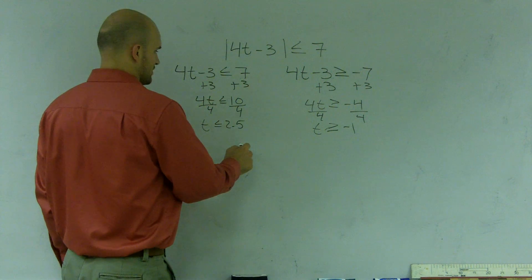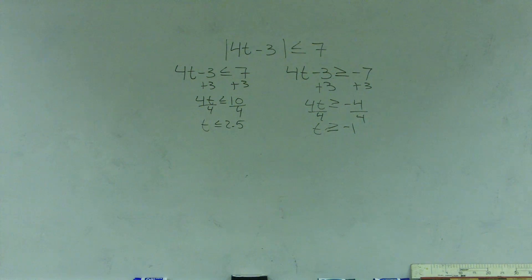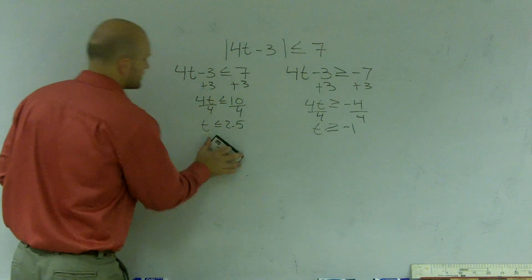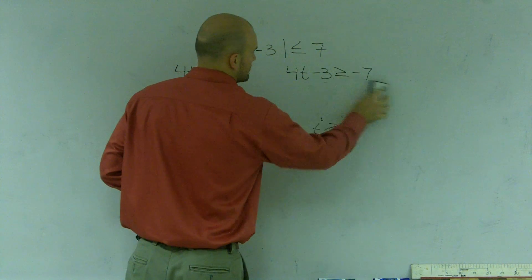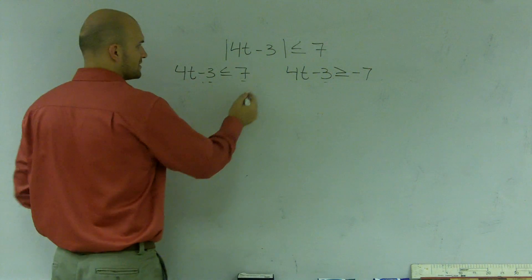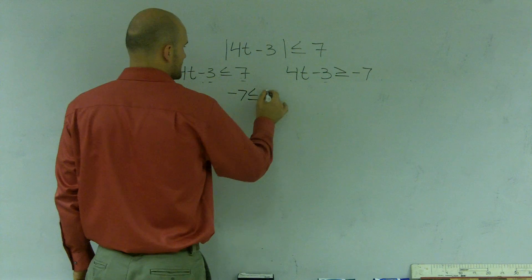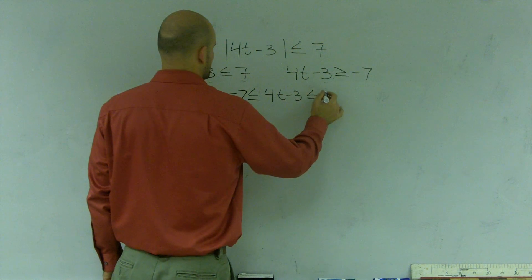Now let's combine them together and solve it and see what we get. Not much room at all. So everybody at least hopefully can get this. Let's solve them together and see if we get the same answers: 2.5 and negative 1. So if I wrote this as negative 7 is less than or equal to 4t minus 3 is less than or equal to 7.